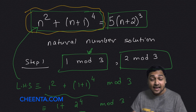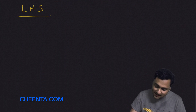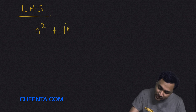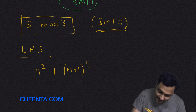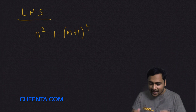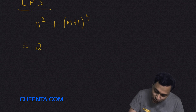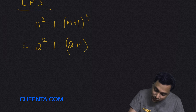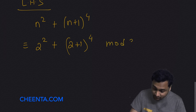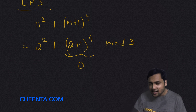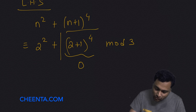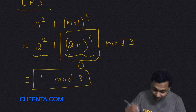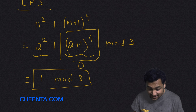Let's look at the left hand side: n squared plus n plus 1, raised to 4. We are in the case n ≡ 2 mod 3. Plugging in, this is congruent to 2 squared plus 2 plus 1, raised to 4, mod 3. That's 7 to the 4th — but 7 ≡ 1 mod 3 — wait: 4 plus 2 plus 1 is 7, and 2 plus 1 is 3 ≡ 0 mod 3, so the whole base is 0 mod 3, raised to 4, giving 0 mod 3 — but wait, it's 1 mod 3 overall. The left hand side is 1 mod 3.